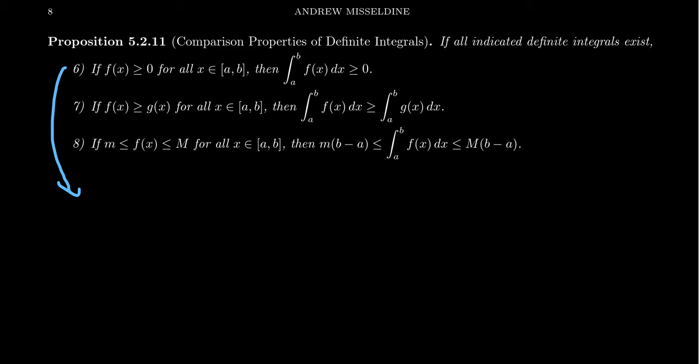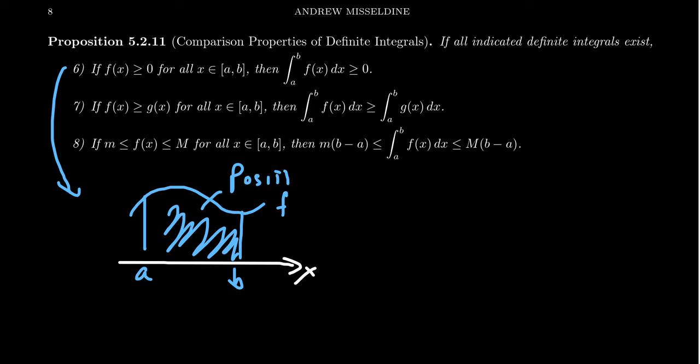If f of x is greater than or equal to 0 for all x inside of an interval, so it's a non-negative function, then the integral from a to b of f of x dx will also be greater than or equal 0. So the idea is that we have a function f, and it sits entirely above the x-axis, or maybe it touches the x-axis in certain places. Well, if we take our values a to b, and we look at the area under the curve, this is going to be a positive area. That's all that property 6 is saying. If you're above the x-axis, the area under the curve will be positive.